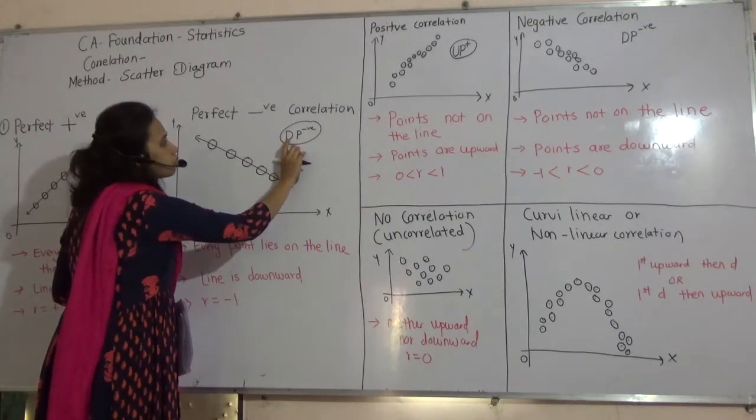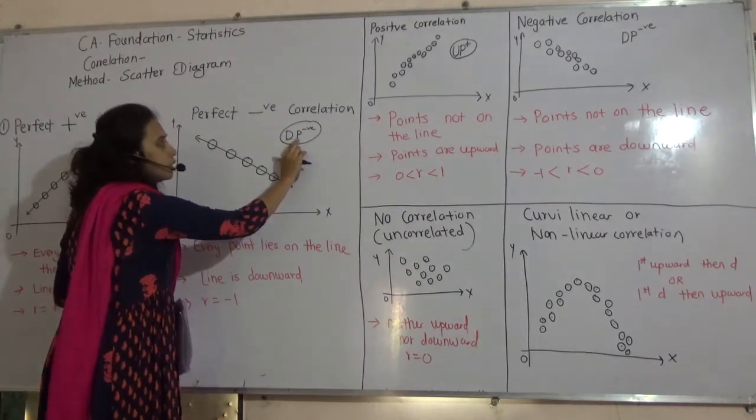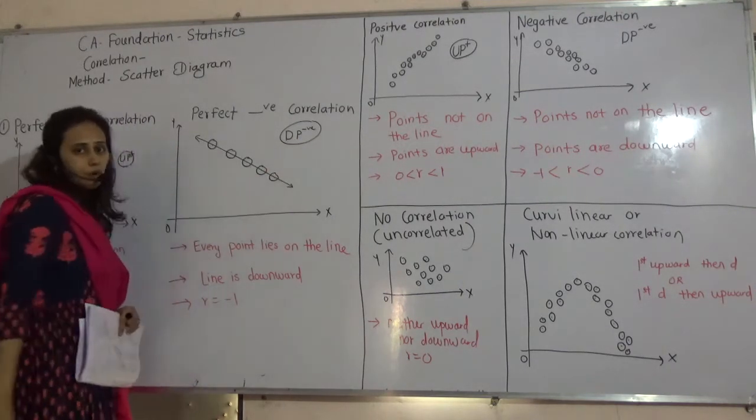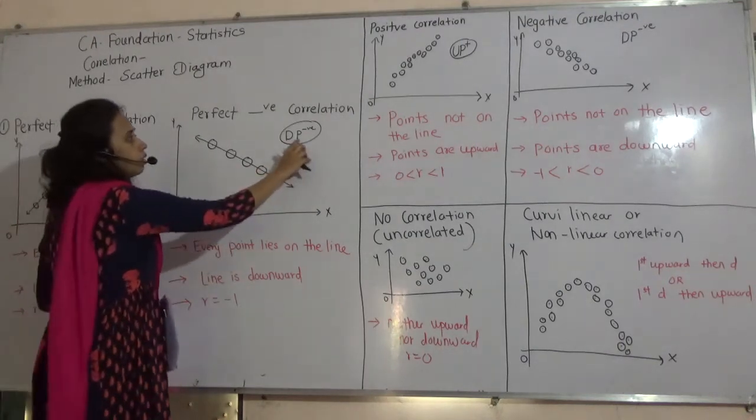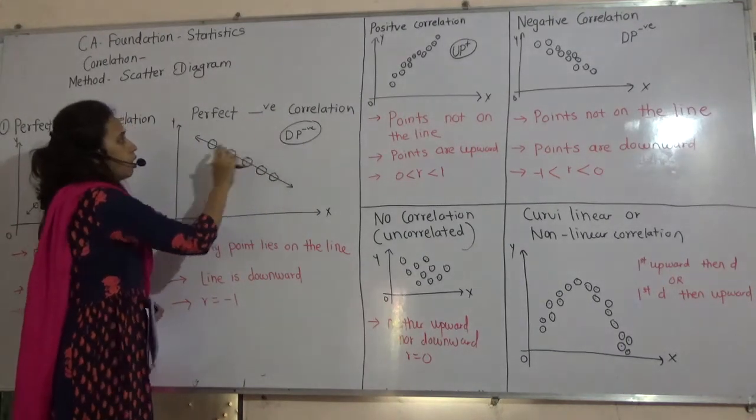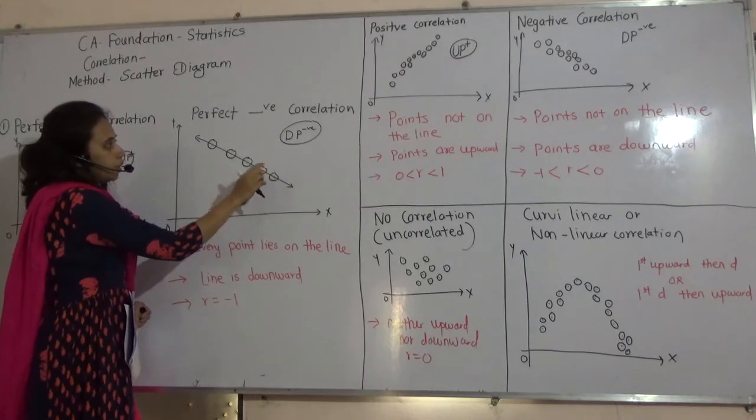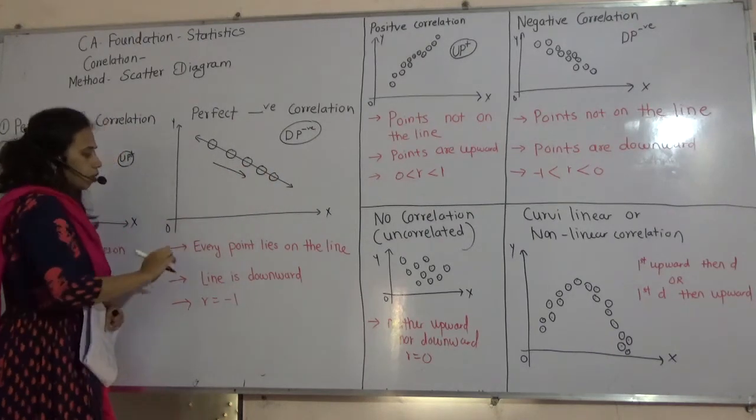So, you all use mobile, so you all know D, P. D, P negative. D stands for downward. P, perfect negative. So, when D, P comes, it will be downward slope.